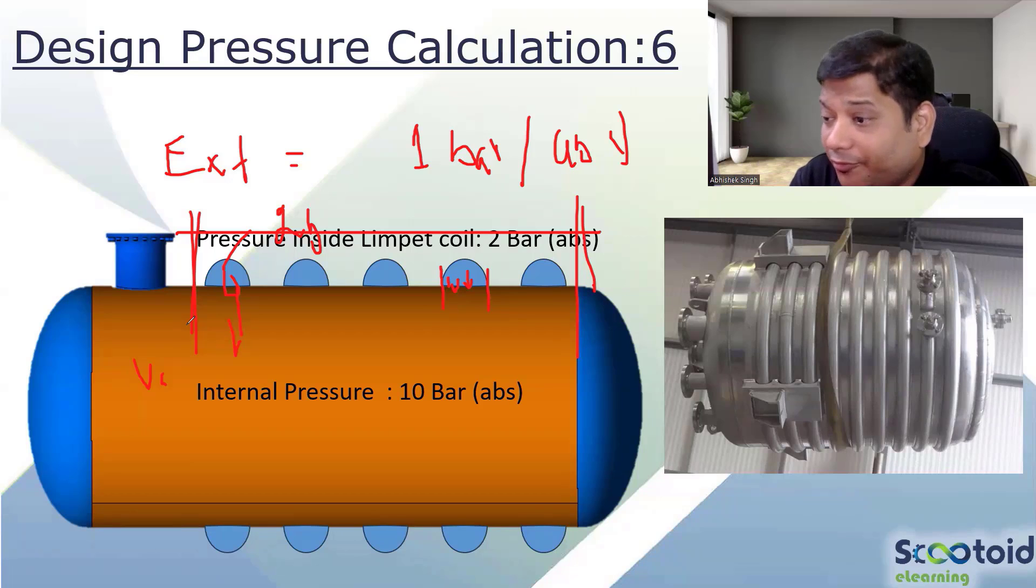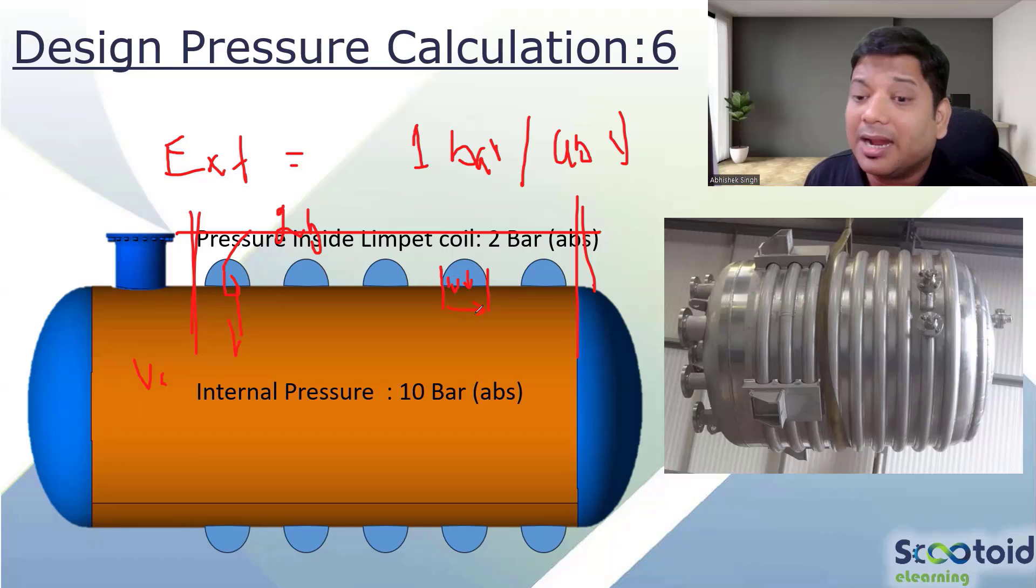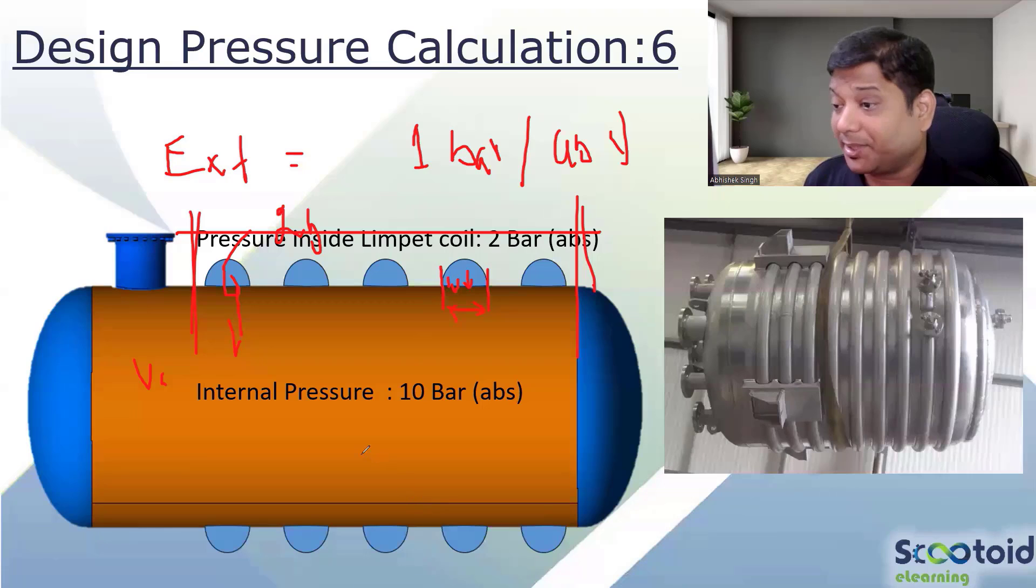That is basically buckling. More length, more problematic. Small length, it is more rigid. So external pressure effect will be much higher if your length is there. In this coil case, because our length is very small, it becomes ineffective. So you don't have to do the external pressure calculation for two bar. If the vacuum exists, one bar is sufficient.